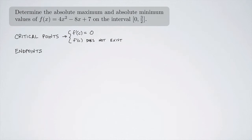In this case, we have a polynomial — something that looks like a parabola if you were to graph it. We know that the derivative is going to exist everywhere, so we don't have to worry about the derivative not existing, but we can find where the derivative is 0.